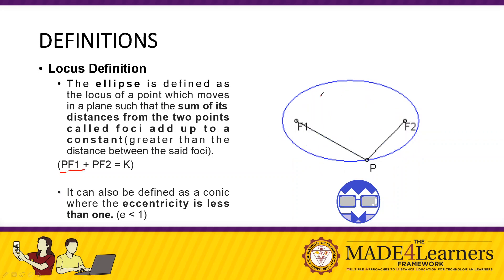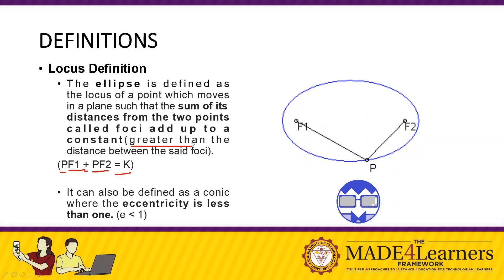In symbols, the distance from P to F1 plus the distance from P to F2 equals k. Note that k is greater than either of the two individual distances — both PF1 and PF2 are each less than k.